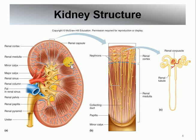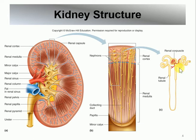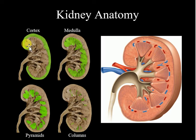Going into more detail: if you take a wedge-shaped section from the kidney, that is called the renal lobe. The renal lobe contains many structures called nephrons. Each nephron consists of a corpuscle and a long tubule — so corpuscle plus tubule equals one nephron, and there are many nephrons per kidney.